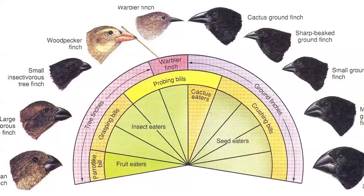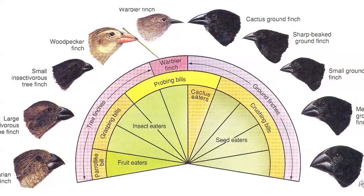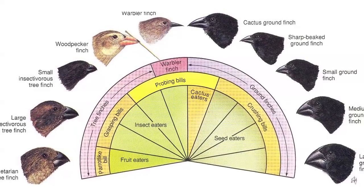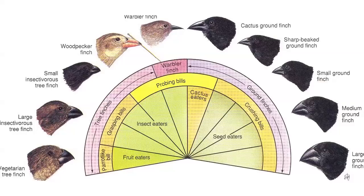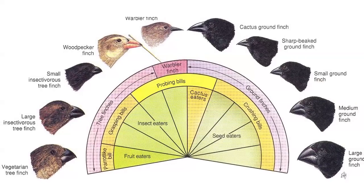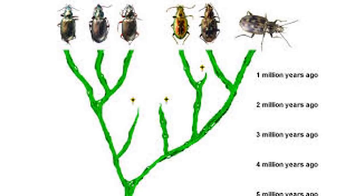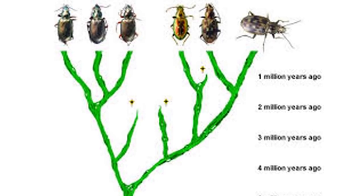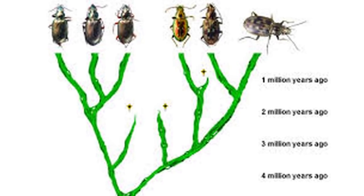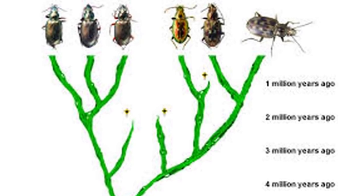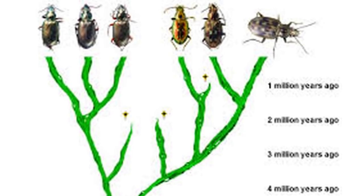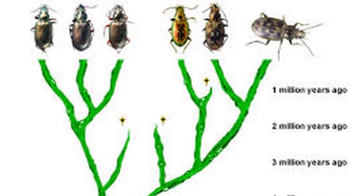An ecological species is defined by the ecological niche it fills. The weakness of this definition lies in the fact that some species are generalists and can fill more than one niche. A genetic species is defined specifically by their genetic ability to reproduce. The weakness here is that it can be difficult to determine whether a lack of reproduction is due to genetics or merely an unwillingness to mate.